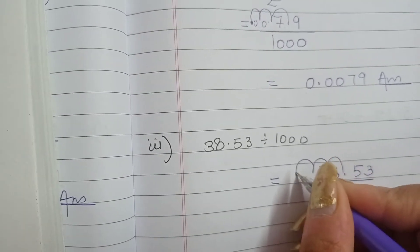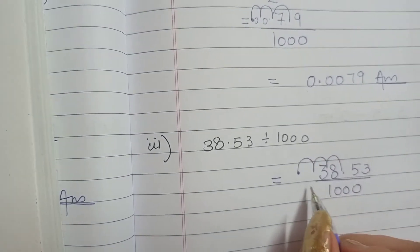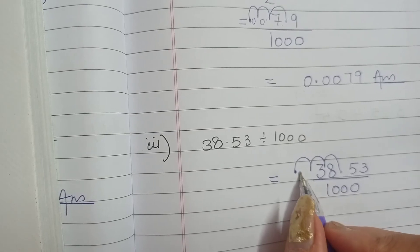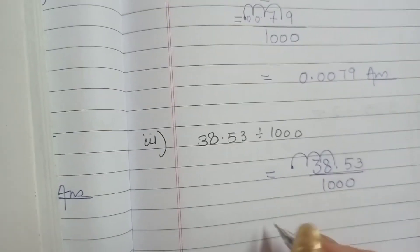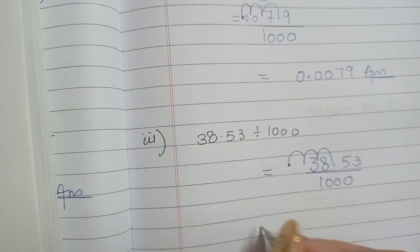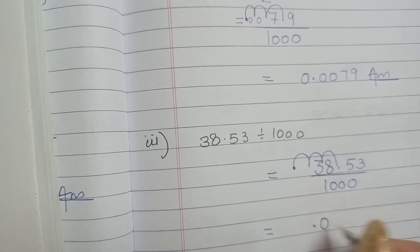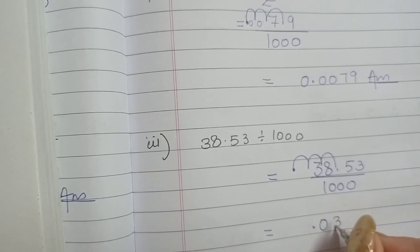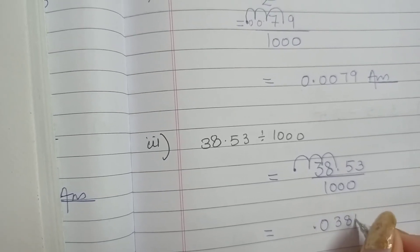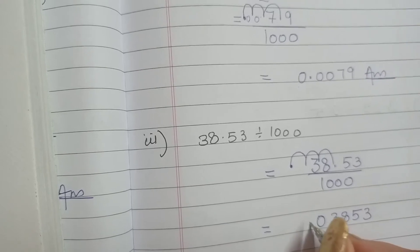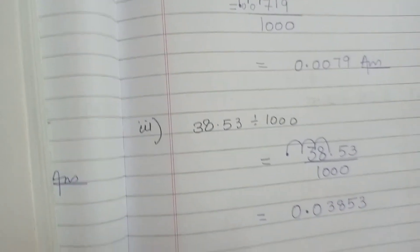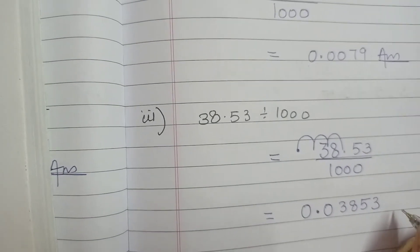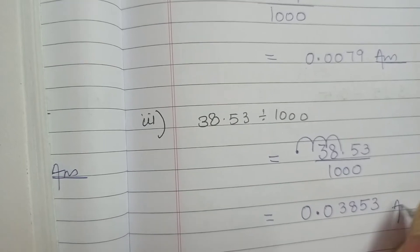2 jumps and 3 jumps. Now in this part there is an empty space between the decimal point and the number. So in that case we have to write a 0, then 3, 8, 5, 3. Before the decimal no number is there, so you have to insert 0. So this was your third part of question 4.